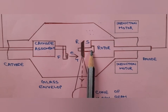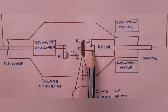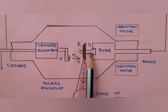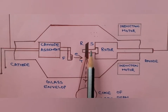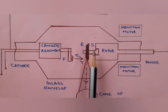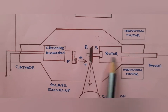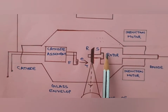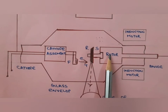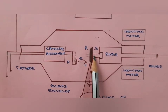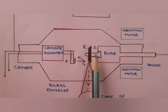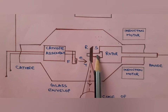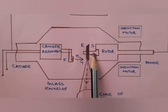Molybdenum is used for the anode stem because its poor heat conduction prevents heat produced at the anode from being transmitted to the rotor. If heat were transmitted to the rotor, it would cause expansion in the rotor and bearings, interrupting the proper functioning and rotation of the anode disc. The second reason for using molybdenum is its high melting point of about 2620°C.